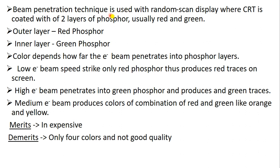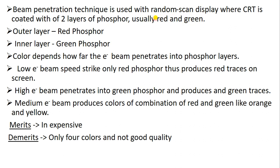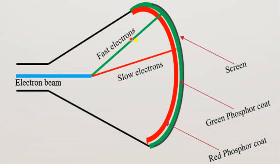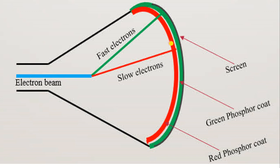Beam penetration technique is used with random scan display, where the CRT is coated with two layers of phosphor — usually red and green. You can see in the diagram: this is the CRT coated with two layers, one layer and another layer. The first one is red and the other is green. So the outer layer is red phosphor and the inner layer is green phosphor, inside the phosphor screen.